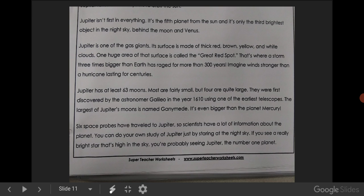Jupiter has at least 63 moons. Most are fairly small, but four are quite large. They were first discovered by the astronomer Galileo in the year 1610, using one of the earliest telescopes. The largest of Jupiter's moons is named Ganymede. It's even bigger than the planet Mercury.